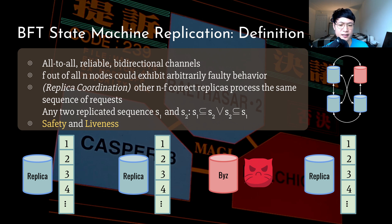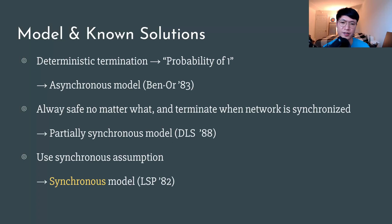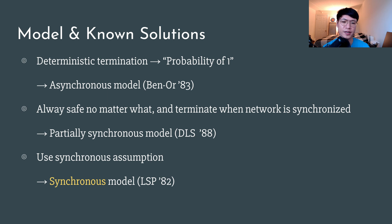That sounds indeed an interesting problem. Unfortunately, it is known to be unsolvable given the well-known FLP impossibility result. To get around the impossibility, people added more assumptions. There are three major models: the asynchronous model that weakens the deterministic termination by using probabilistic termination; the partially synchronous model that assumes liveness after the network becomes synchronous; and finally, the synchronous model which assumes an upper bound for the delivery of each message. And this is the focus of this talk.